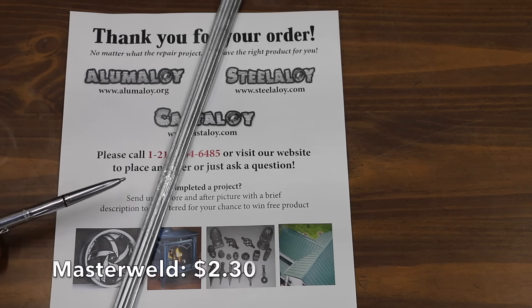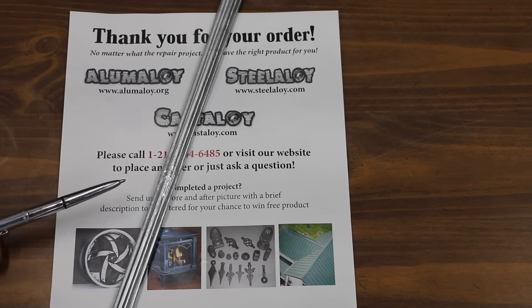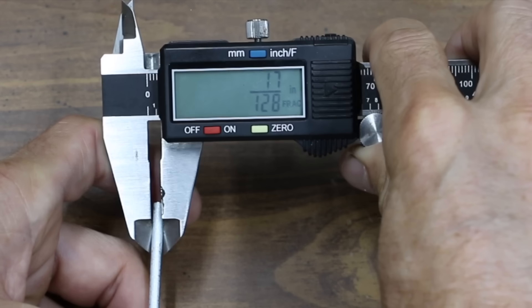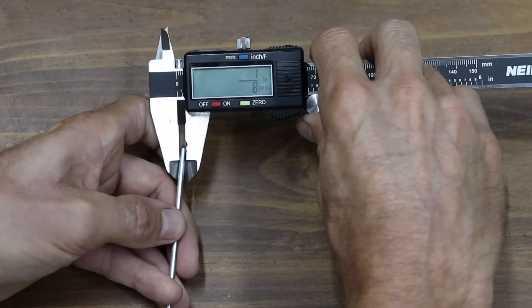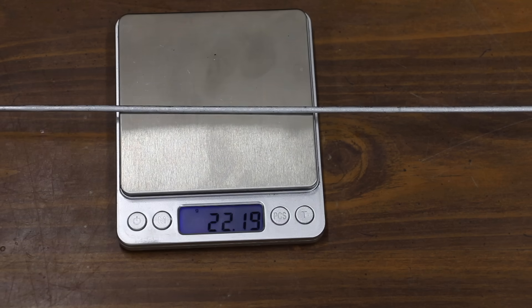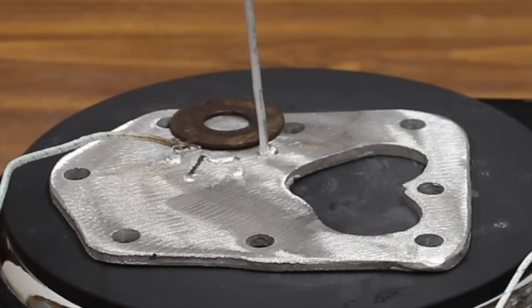At $22.95, or $2.30 per welding rod, the third most expensive brand we'll be testing is made by Masterweld. Made in USA. 17/128. 1/8 of an inch. 22.19 grams. The Masterweld is melting at approximately 740 degrees Fahrenheit.